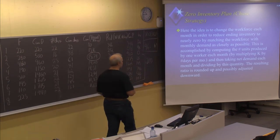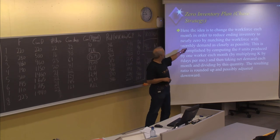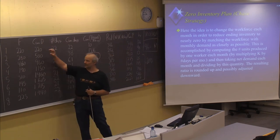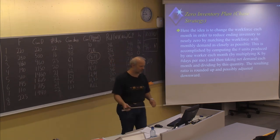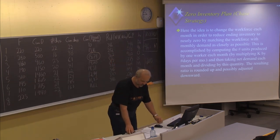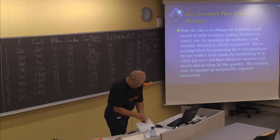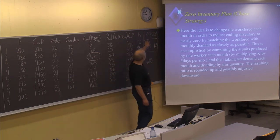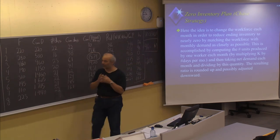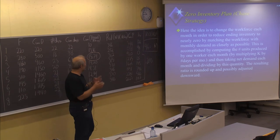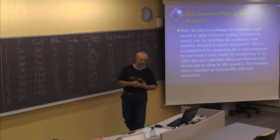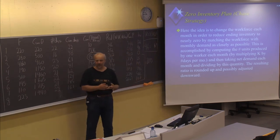Now let's look at the chase strategy, also called the zero inventory plan — always chasing production to fit as closely as possible to the exact demand for each period. The K factor remains the same; the example is the same. Regardless of strategy, we should know how much one person produces in one day. The K factor describes that number based on historical data.